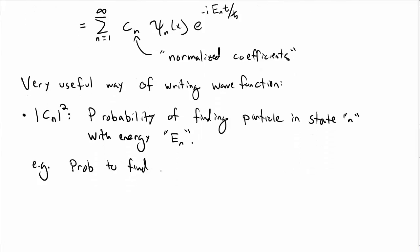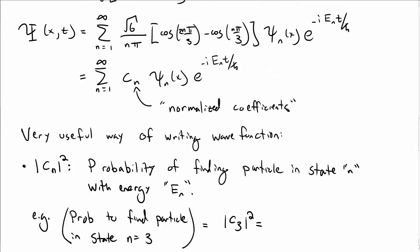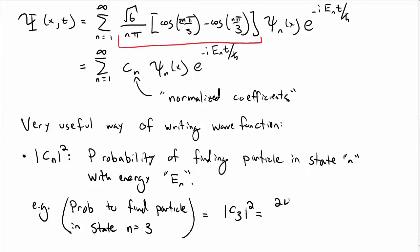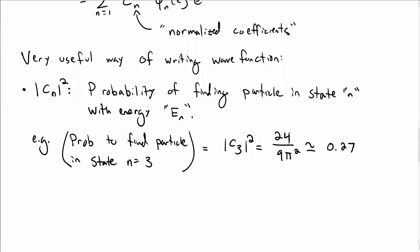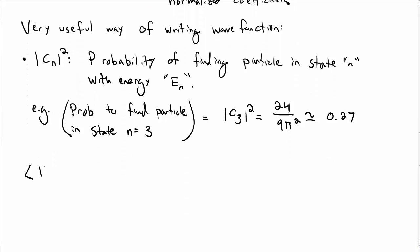So, for example, the probability to find the particle in the n equal to 3 state is equal to the absolute value of c3 squared. And plugging in what we have for c sub 3 here and calculating it, it turns out it's 24 over 9 pi squared, which is about 0.27. There's about 27% chance of finding it in n equal to 3.